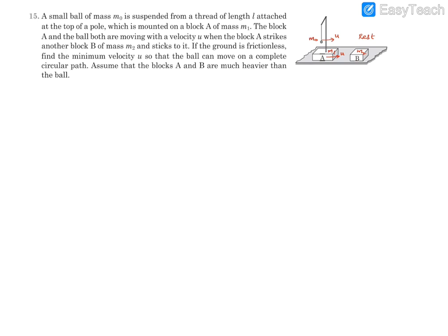The ground is frictionless, so there is no frictional force acting in the horizontal direction. We need to find the minimum value of u so that the ball can move on a complete circular path, so it involves the concepts related to vertical circular motion.